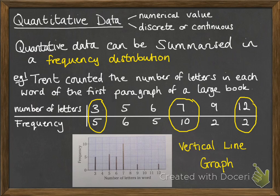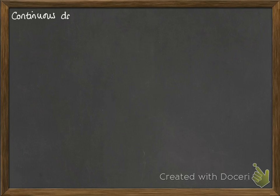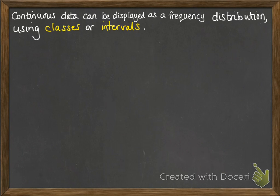That was an example of discrete data, meaning it was something we could count in whole numbers. This can also be done for continuous data. We can display it as a frequency distribution.